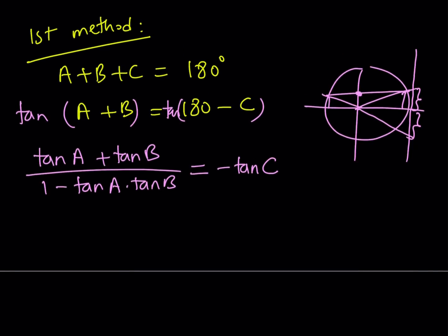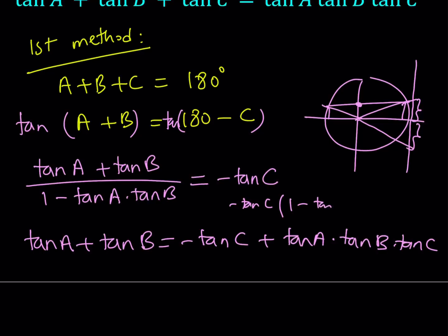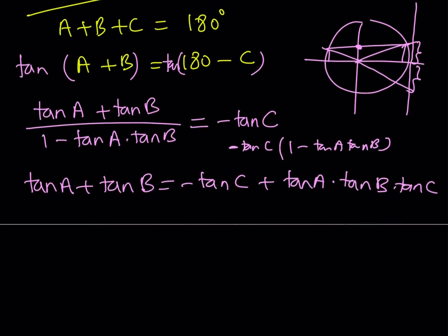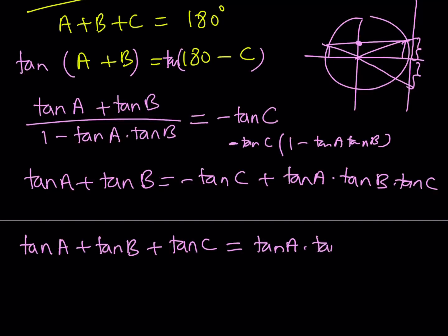Let's go ahead and see how that works. I'm going to cross-multiply. Tangent A plus tangent B equals 1 minus tangent A tangent B, multiplied by negative tangent C. Distributing gives: negative tangent C plus tangent A times tangent B times tangent C. I want to get all the tangents into the sum, so I'm going to add tangent C to both sides. That gives me tangent A plus tangent B plus tangent C equals tangent A times tangent B times tangent C. This concludes the first method.